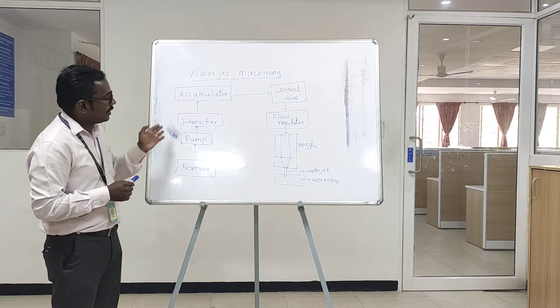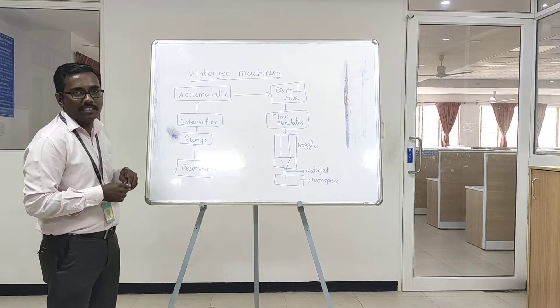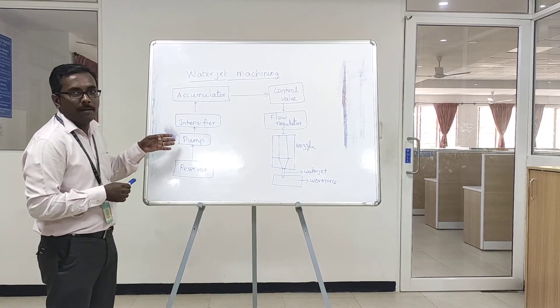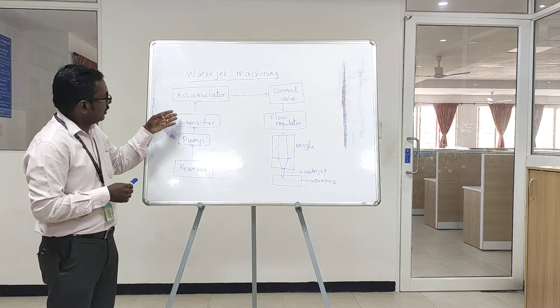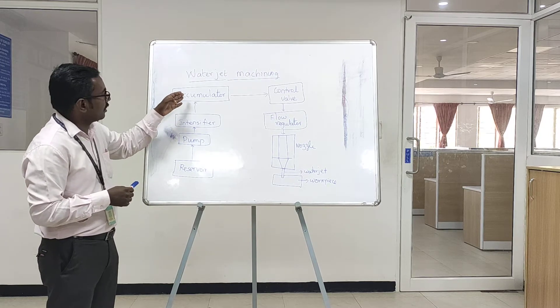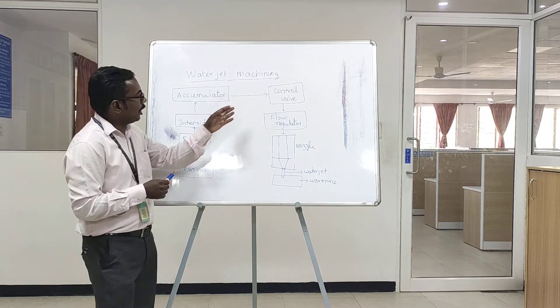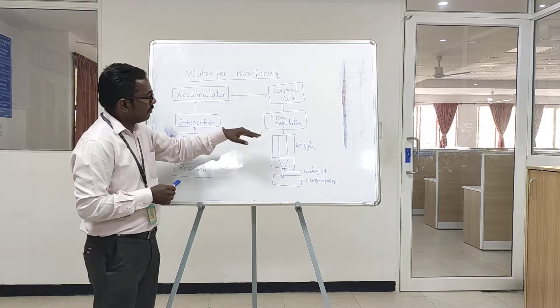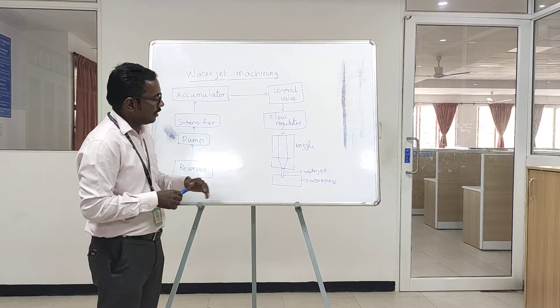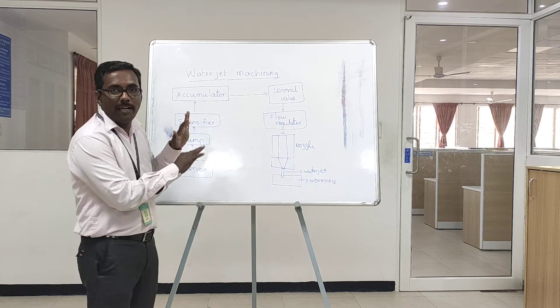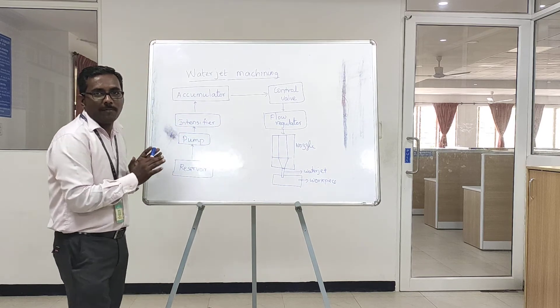The major components in the water jet machining are: reservoir, pump, intensifier, accumulator, control valve, flow regulator, and nozzle. These are the major components.